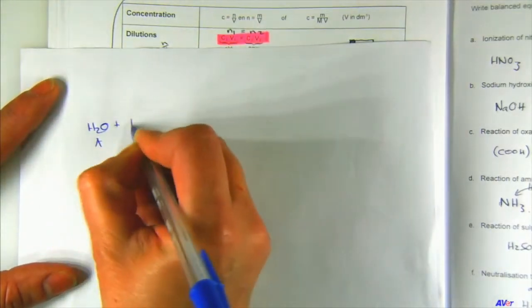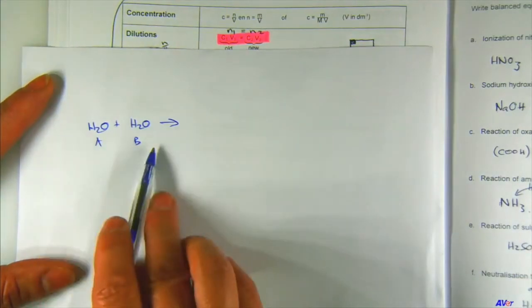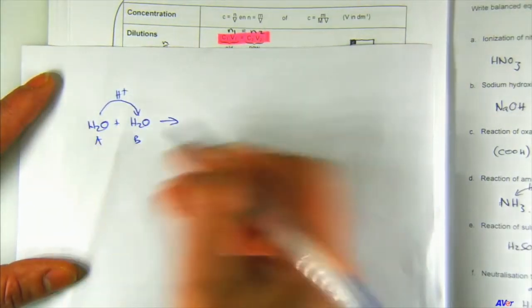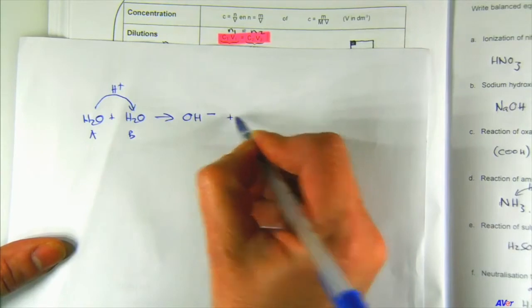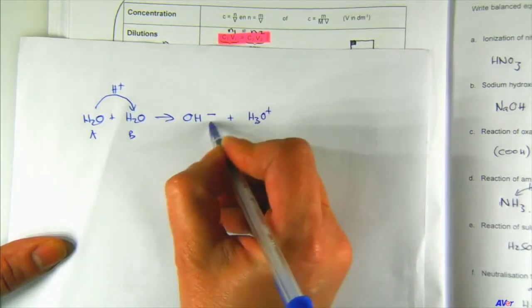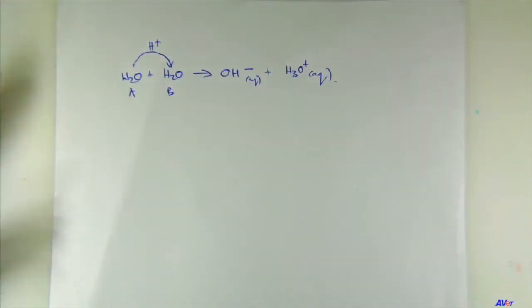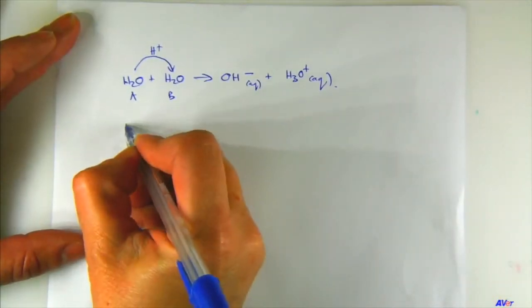An amphiprotic substance can react as either an acid or a base. In autoprotolysis, one water molecule acts as an acid (proton donor) and the other acts as a base (proton acceptor), producing OH⁻ and H₃O⁺. It's called autoprotolysis of water because water reacts with itself and a proton is transferred — as opposed to electrolysis, which involves electron transfer.